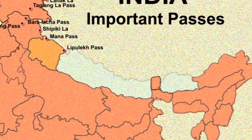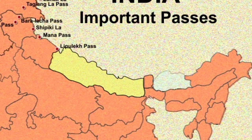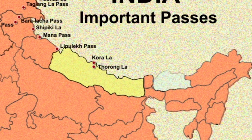Then we come to Nepal. Here we shall learn two passes. One is Kora La, which is a mountain pass between Tibet and Upper Mustang. The second one is the Thorong La Pass.